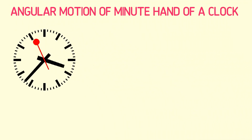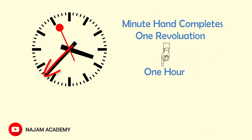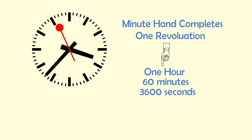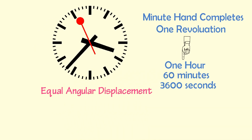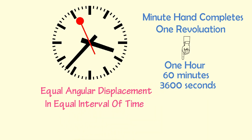Let's consider a clock. I will discuss the angular motion of the minute hand of a clock. The minute hand of a clock completes one revolution in one hour, or 60 minutes, or 3600 seconds. This means the minute hand covers equal angular displacement in equal intervals of time, every hour.